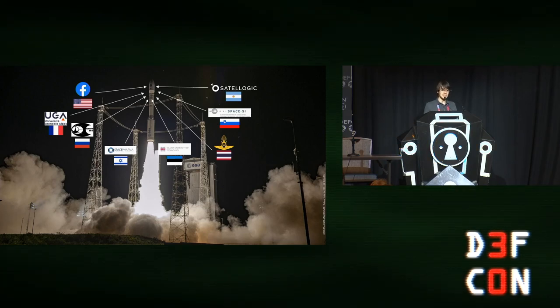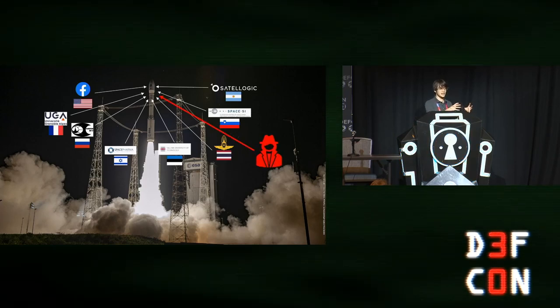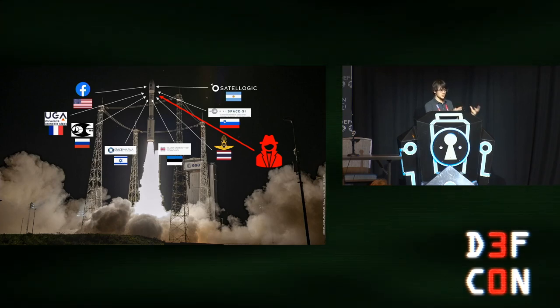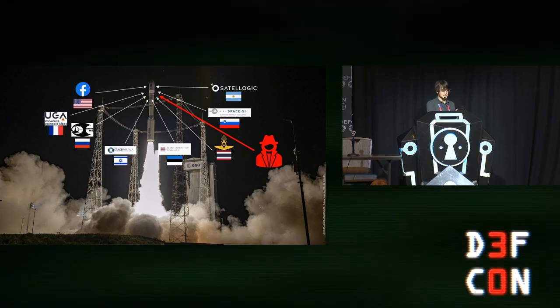And in our threat model today, we're going to imagine that one of these entities is malicious. They put a CubeSat, a small satellite, onto this rocket that is designed to try to disrupt the mission by causing GPS interference that makes the rocket not know where it is. Now, turns out you can't just walk up to Elon Musk with a block of C4 and say, please attach this to your rocket, I promise I won't blow it up.